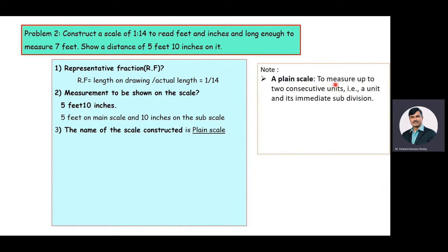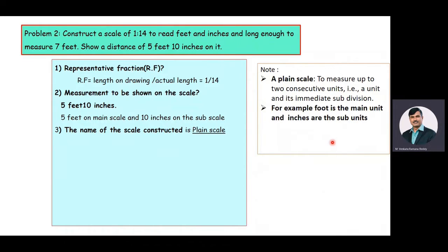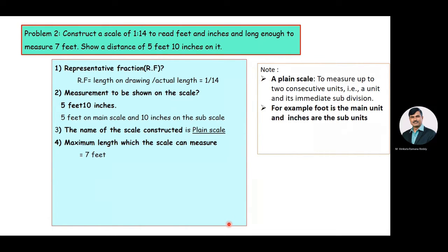A plane scale is used to measure up to two consecutive units — a main unit and its immediate subunit. Here the main units are in feet and the subunits are in inches, with 1 foot equal to 12 inches. The maximum length the scale can measure is 7 feet.